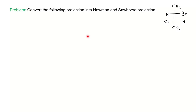The first problem is to convert the following Fisher projection into Newman and sawhorse projection. This problem is taken from the BCU previous year question paper. If you are already aware of what Newman, sawhorse, and Fisher projections are, you can go ahead with this video; otherwise, first learn the basic definitions. This is a Fisher projection and the molecule has two chiral centers and a four-carbon chain.